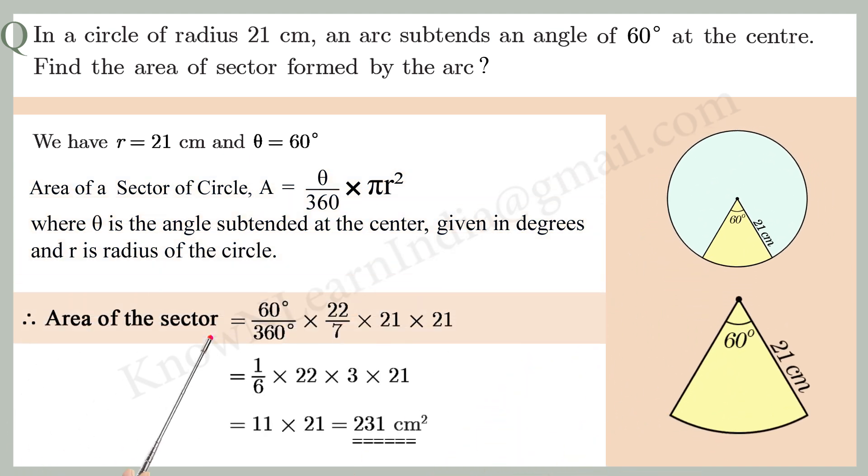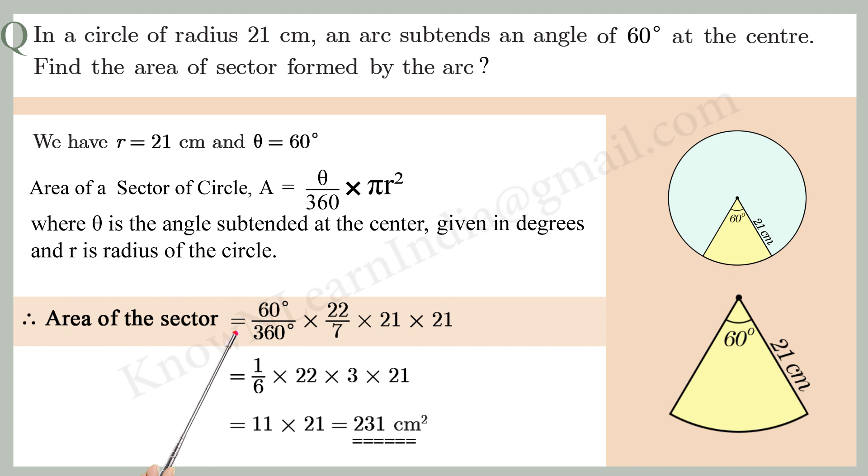Therefore, area of the sector formed by the arc is equal to 60 by 360 into 22 by 7 into 21 into 21, is equal to 1 by 6 into 22 into 3 into 21, is equal to 11 into 21, is equal to 231 cm square.